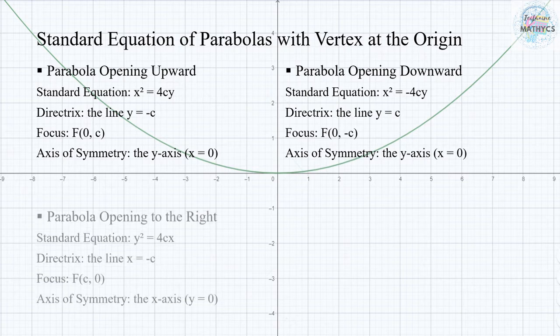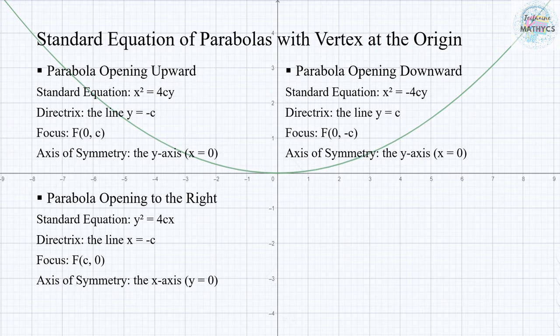A parabola opening to the right has an equation of y squared equals 4Cx, with the directrix at line x equals negative C, its focus is at (C, 0), and the axis of symmetry is at the x-axis where y equals 0.